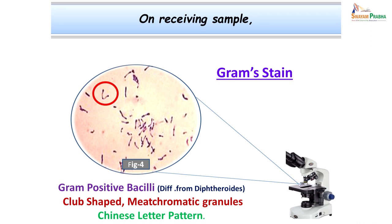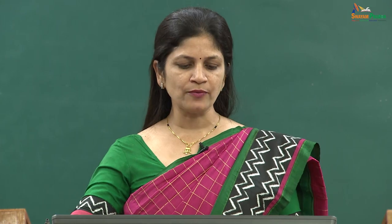Another staining performed was Albert stain, in which the typical Chinese letter pattern arrangement was again confirmed — L and V forms could be seen. This arrangement is seen because of a particular type of division these organisms undergo during binary fission. This is called snapping cell division, wherein the cells divide horizontally and fail to separate from each other, remaining attached at acute angles to one another, resulting in the formation of the cuneiform or Chinese letter arrangement.